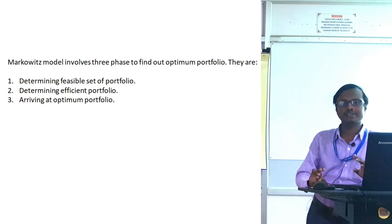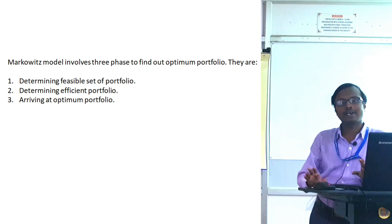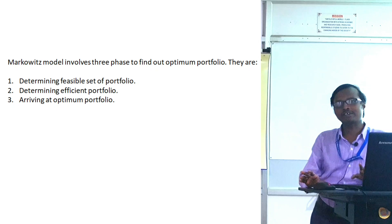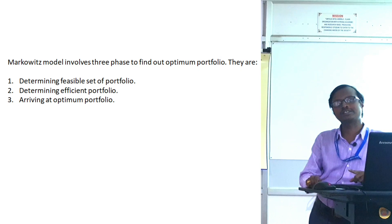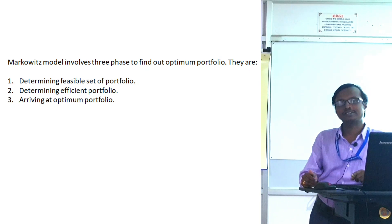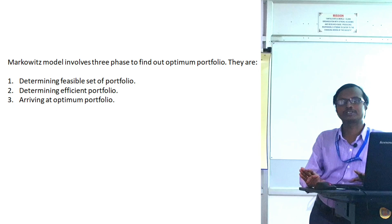The feasible portfolio is nothing but with a given amount of money an investor can construct any number of portfolios. For example, if I have one hundred rupees and there are two stocks, stock A and stock B, I can invest 50% in stock A and the remaining in stock B — that is one portfolio. If I change the proportion to 40/60, that is a second portfolio. All possible portfolios we can construct with this amount are known as feasible portfolios.